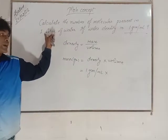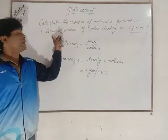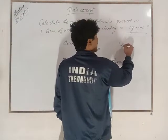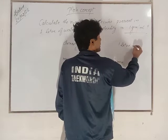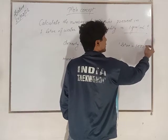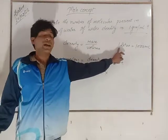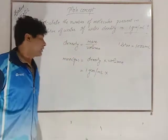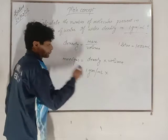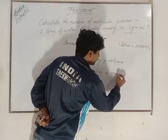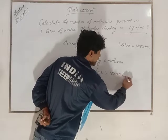Here, 1 liter is the volume. In 1 liter, how many ml? 1 liter is equal to 1000 ml. Here, volume will be equal to 1000 ml.